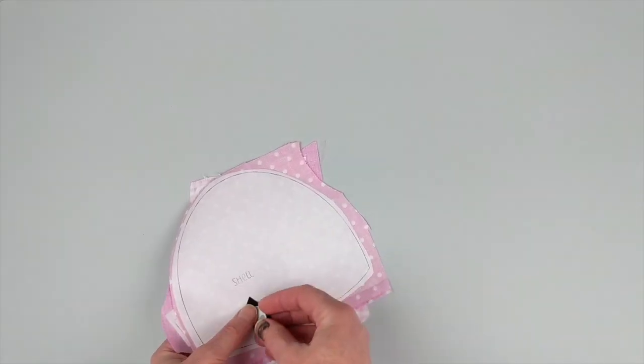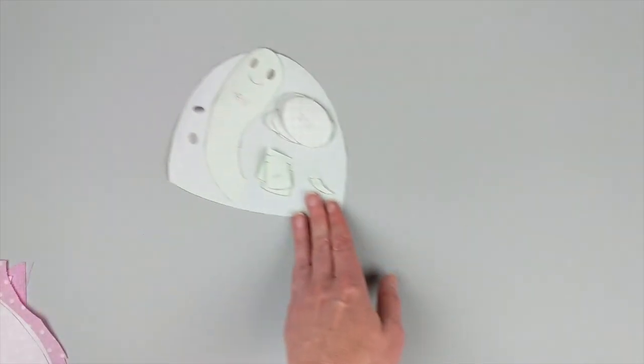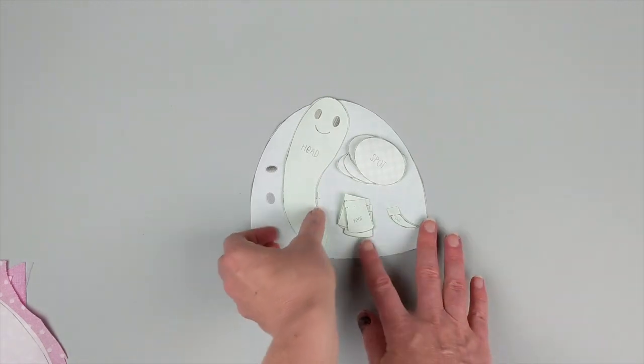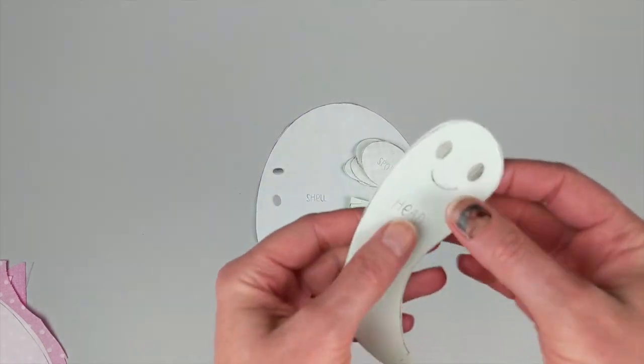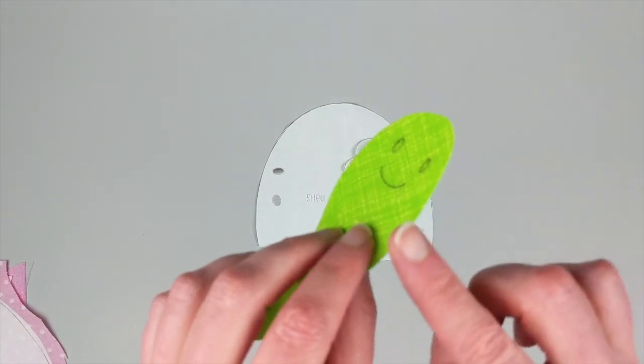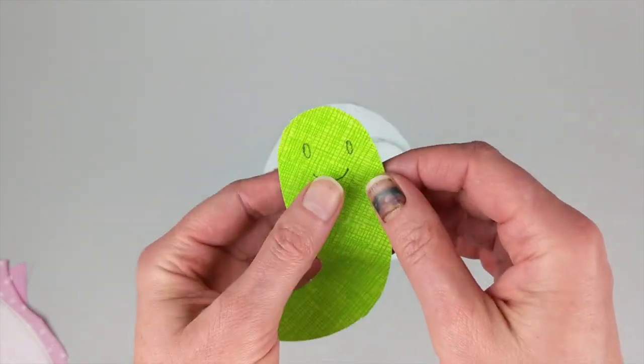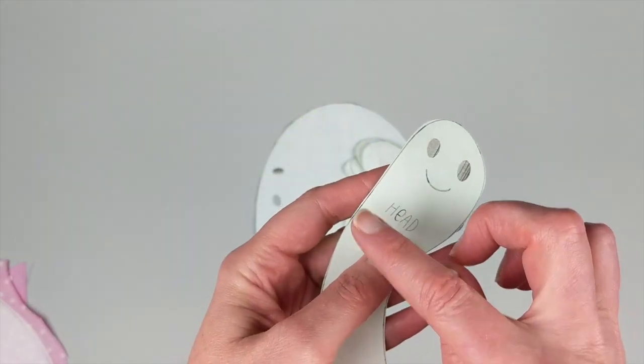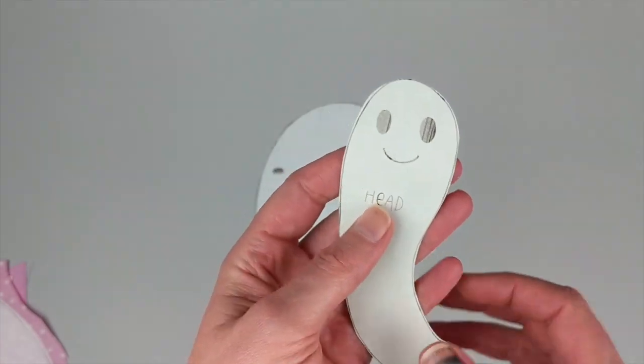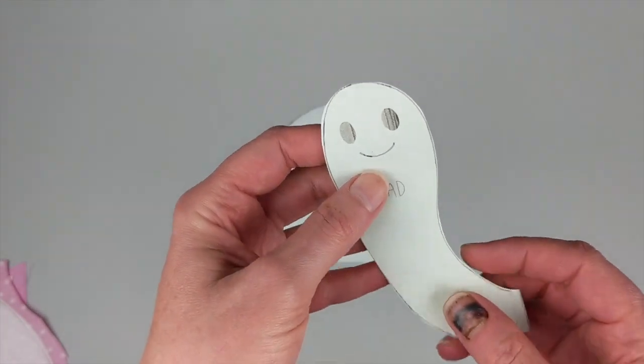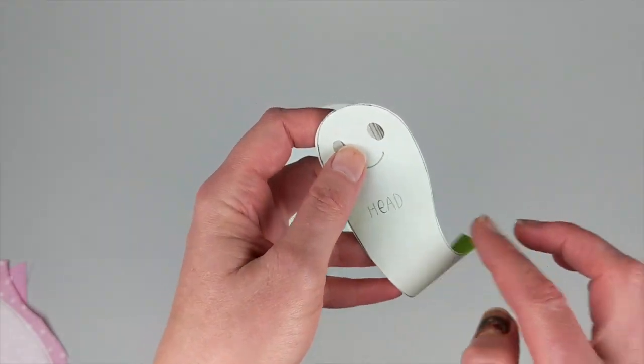The second time you cut it out is when you do what I call a clean cut. The reason that you do the clean cut after fusing is so that the adhesive goes all the way up to the cut edge of the fabric.